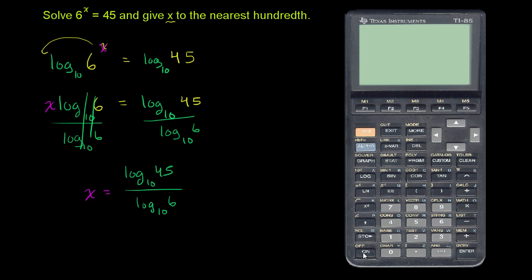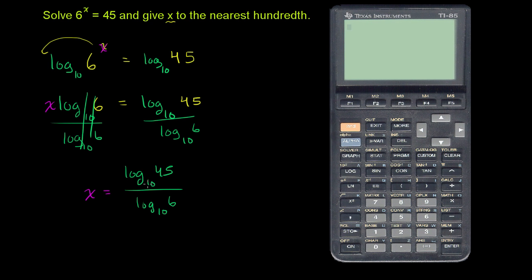So to do this, let's turn the calculator on. Let me clear what I had from the last problem. So the log base 10 of 45, I can literally just use the log button. Log of 45, that means base 10. If someone just writes a log without a little subscript 10, this means base 10. So that's log base 10 of 45 divided by log base 10 of 6.